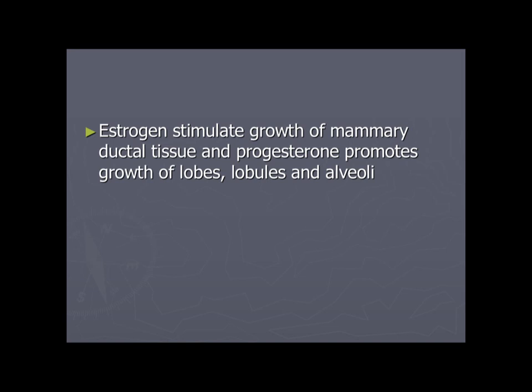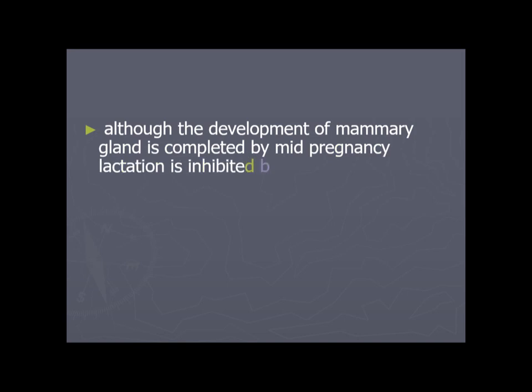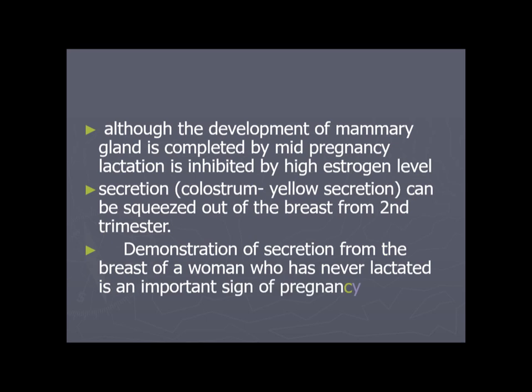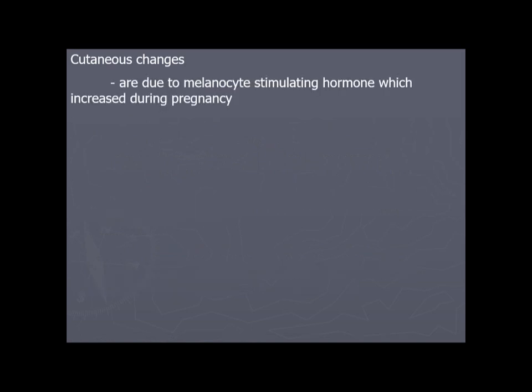Estrogen stimulates growth of mammary ductal tissue; progesterone promotes growth of lobules and alveoli. Although mammary gland development is completed by mid-pregnancy, lactation is inhibited by high estrogen levels. Colostrum, which is yellow in color, can be squeezed from the breast from the second trimester. The presence of secretion from the breast of a woman who has never lactated is an important sign of pregnancy. Cutaneous changes are due to increased melanocyte-stimulating hormone during pregnancy.